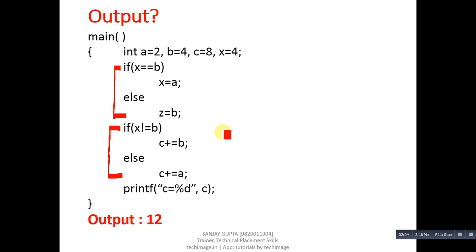First if is checking x and b. Value of x is 4 and b is also 4, so this condition is true. So a will be assigned into x. Value of a is 2, so new value of x will become 2.